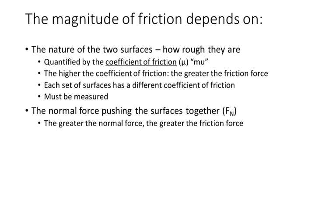The size — or magnitude — of friction depends on two things. Number one: the nature of the two surfaces, basically how rough they are. We can quantify that roughness by a number called the coefficient of friction, given the symbol Greek letter mu, which looks like a U with a long tail on the front. The higher that number is, the greater the friction force is going to be.